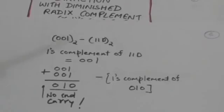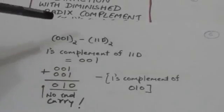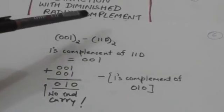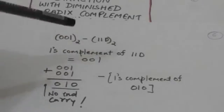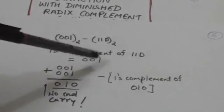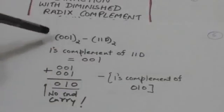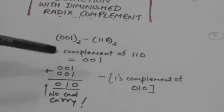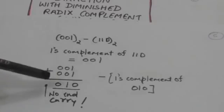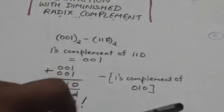Now we have to subtract these two binary numbers: we have to subtract 110 from 001. First we will find the 1's complement of 110, which is 001. Then we will add this 1's complement of 110 to 001. When we add these two binary numbers, their sum doesn't produce any end carry.